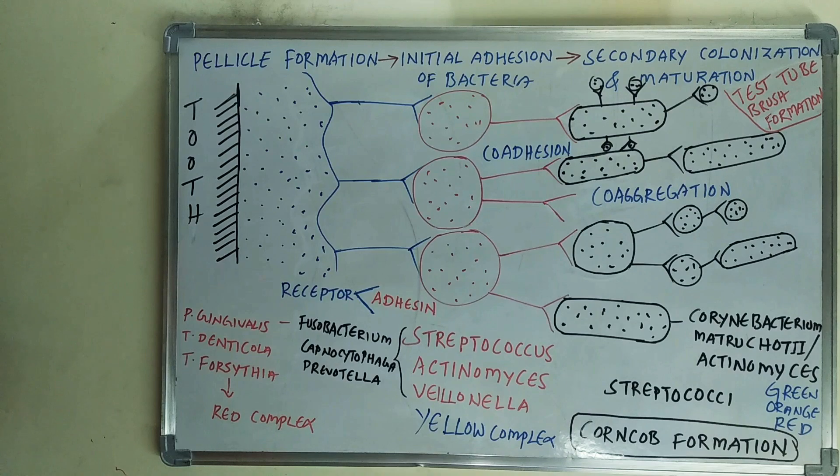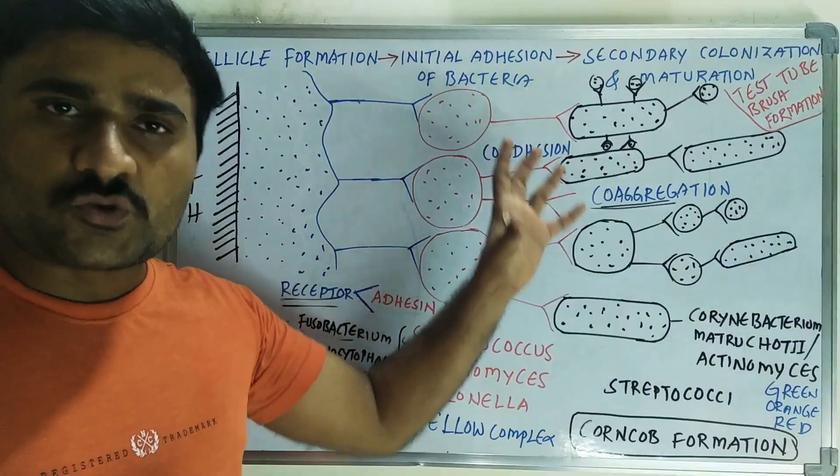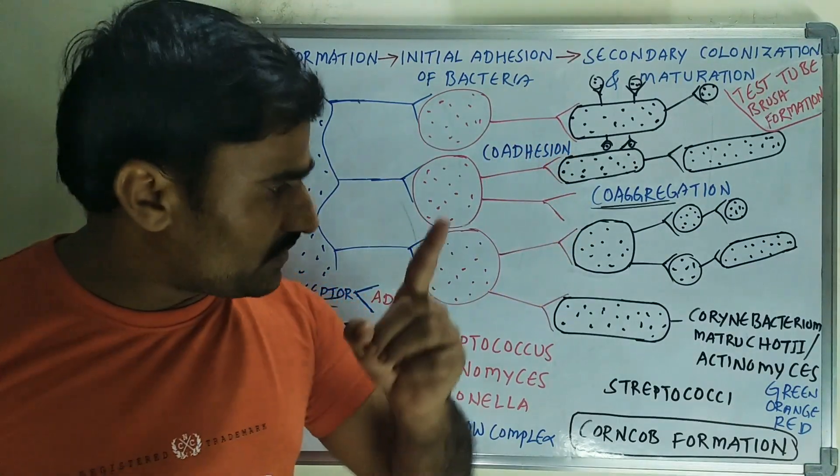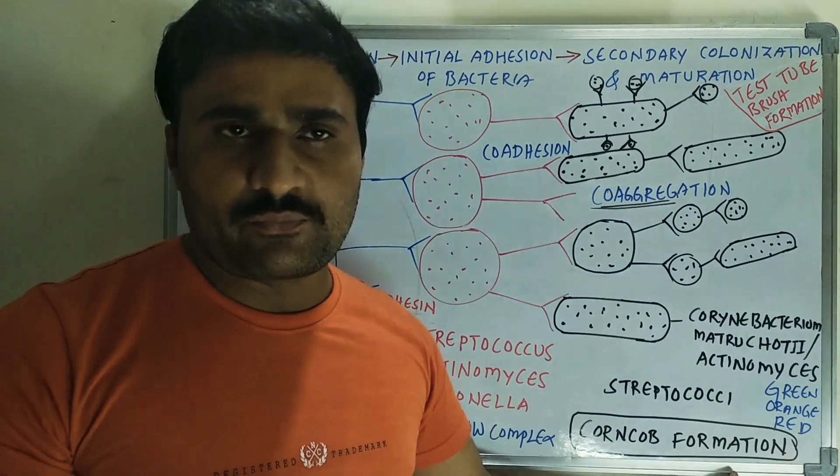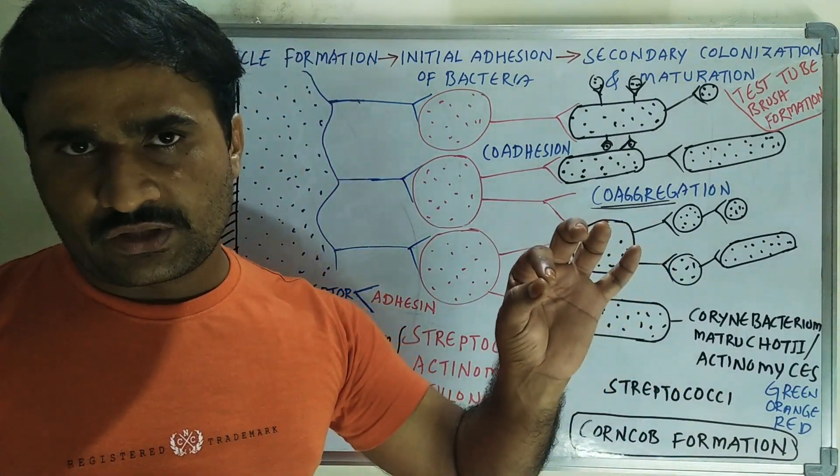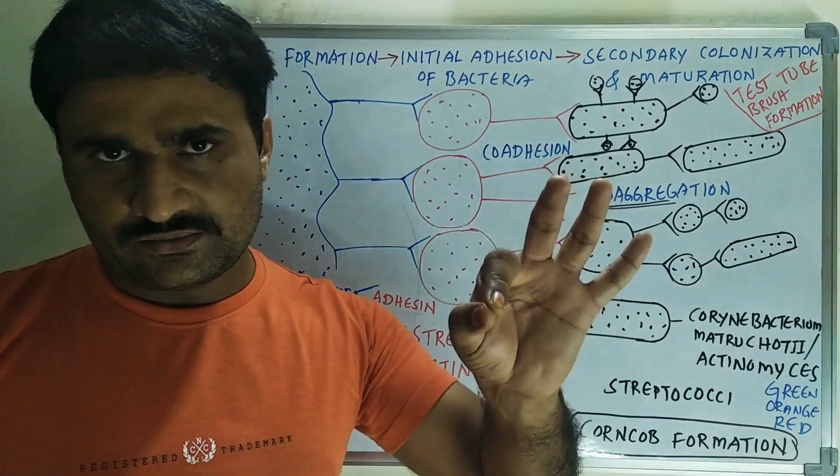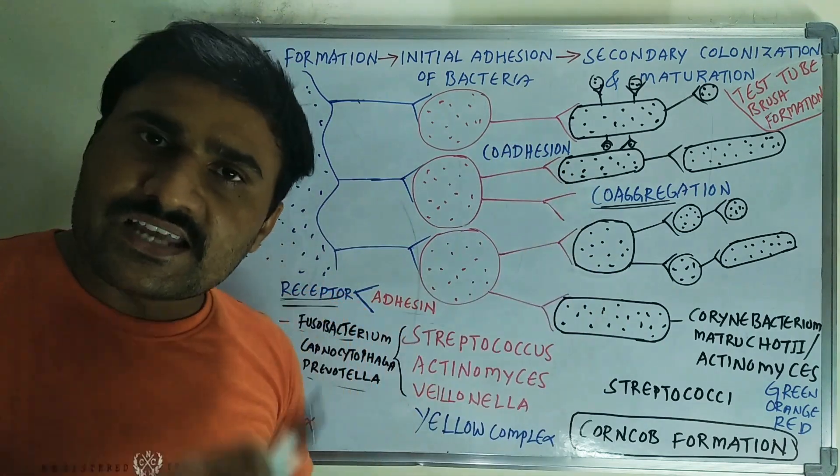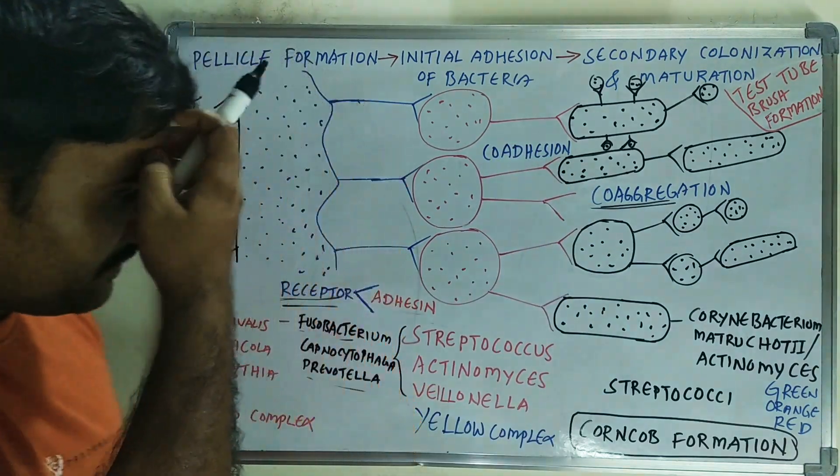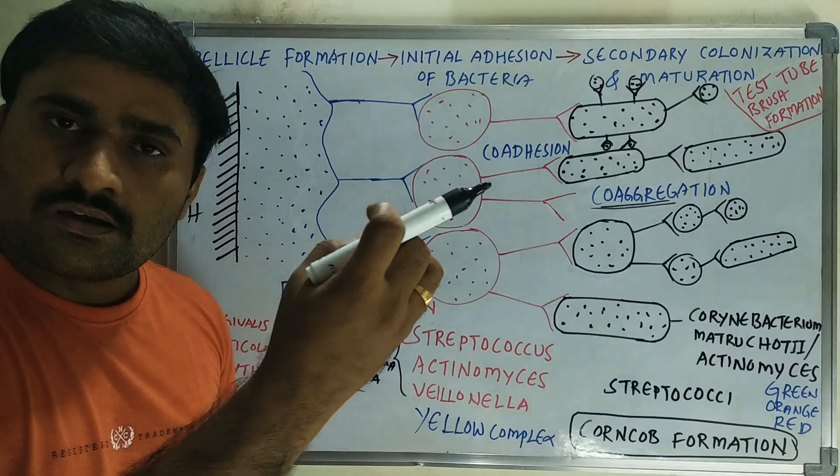You can see here this co-aggregation. The first one is corncob formation, very important. In the maize, in the center there is wood.